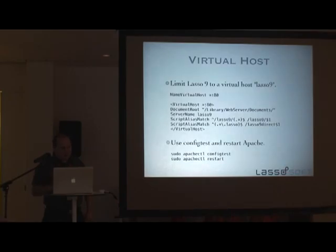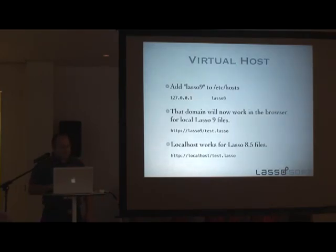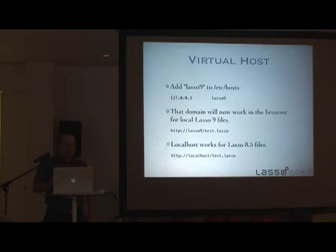Set the document root to the full root, then restart Apache. I always like to do a config test because Apache sometimes doesn't give you any error message if you just restart it, but the config test is usually fairly explicit. Then we need to go into our /etc/hosts file — this should be the same on Linux — and we're going to add a new localhost alias. If you look in this file, you'll see this is exactly how localhost is configured. We're essentially adding an alias for localhost called "lasso9", which maps to 127.0.0.1, the loopback address. When a request comes back to the server, it sees the host is named "lasso9" and routes all files through Lasso 9.